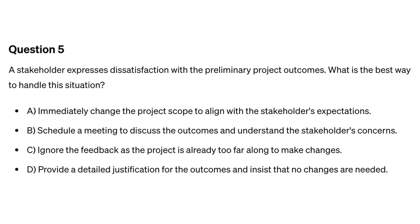Question five. A stakeholder expresses dissatisfaction with the preliminary project outcomes. What is the best way to handle this situation? A. Immediately change the project scope to align with the stakeholder's expectations. B. Schedule a meeting to discuss the outcomes and understand the stakeholder's concerns. C. Ignore the feedback as the project is already too far along to make changes. D. Provide a detailed justification for the outcomes and insist that no changes are needed.